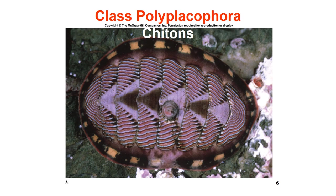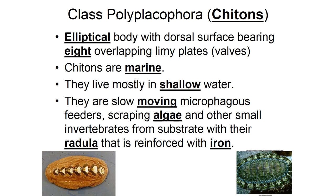The next class is polyplacophora, also known as chitons. They usually have an elliptical body with a dorsal surface bearing eight overlapping limey plates, or valves. They live in marine environments, usually shallow waters. They're very slow-moving and they feed on microphagic matter — very microscopic things like algae and small invertebrates. They use their radula to scrape this, and it's reinforced with iron, making it a very tough organ.